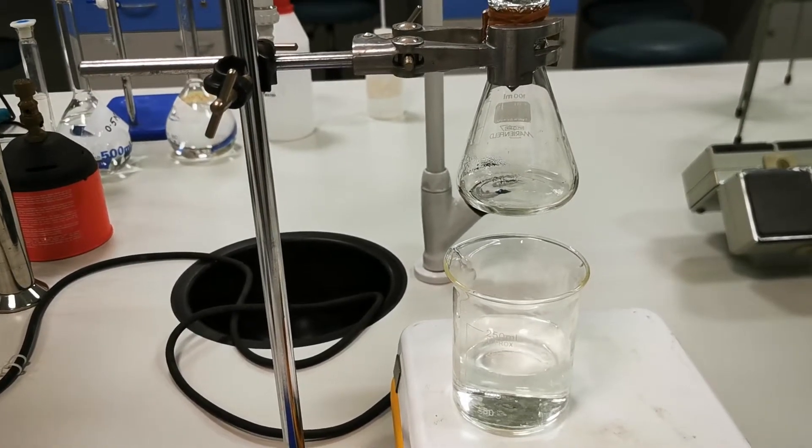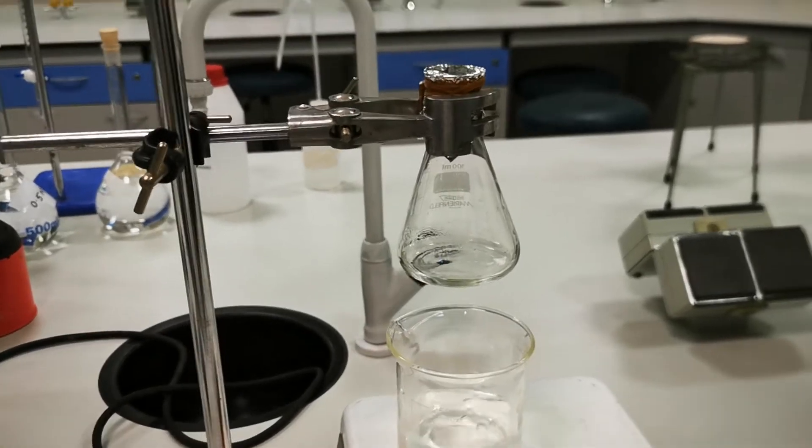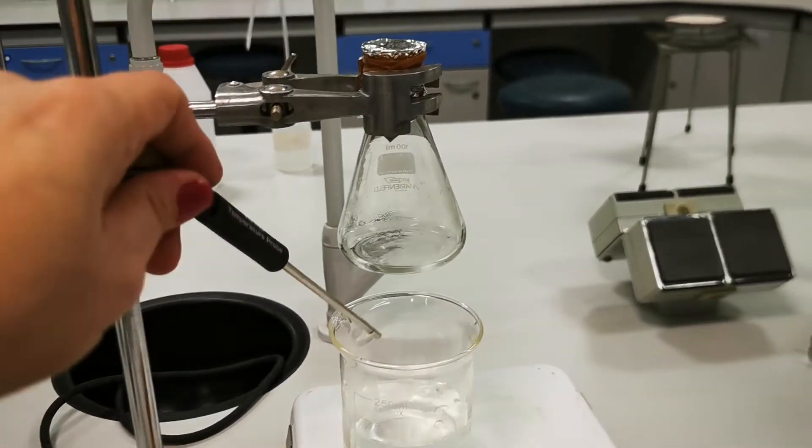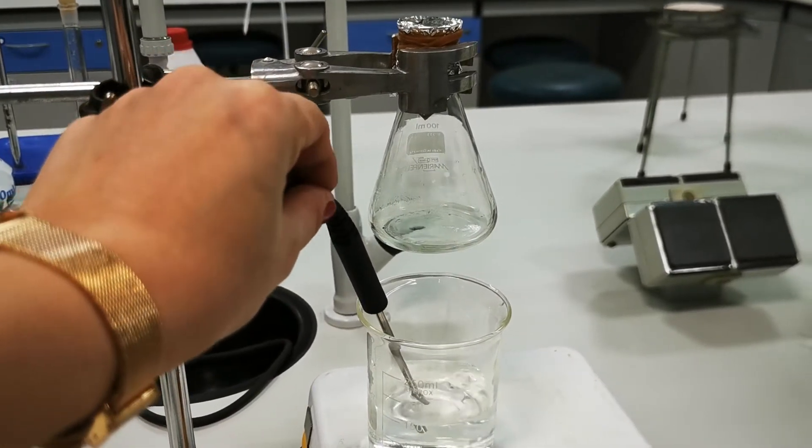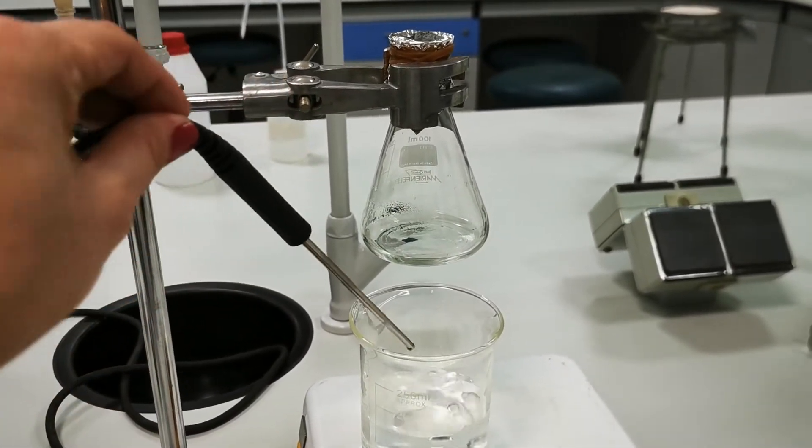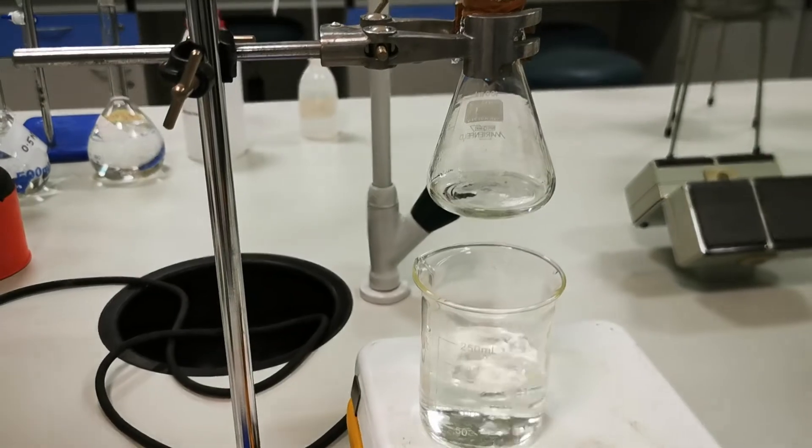So, the temperature... The water started to boil, so it's reaching 100 degrees Celsius. I'm going to now insert the Erlenmeyer flask, containing the volatile liquid, in the boiling water.